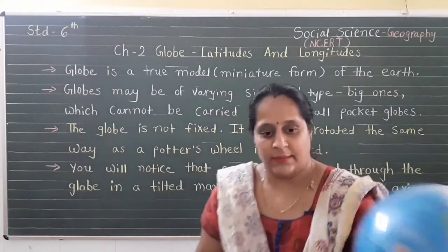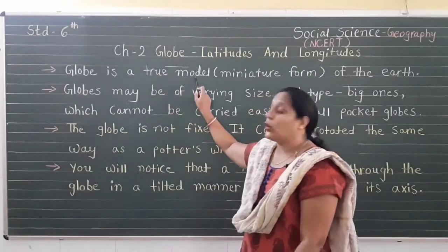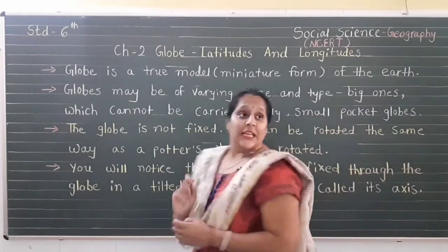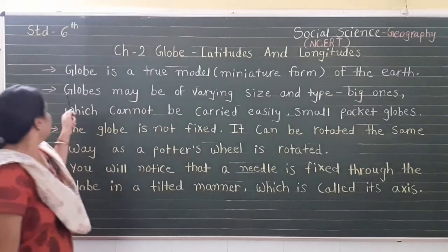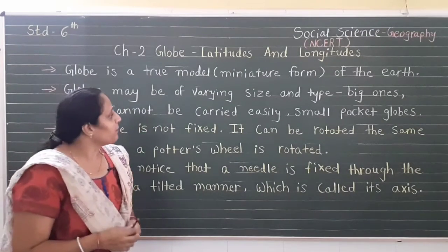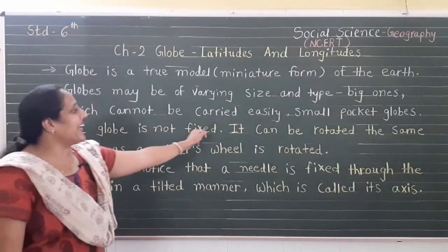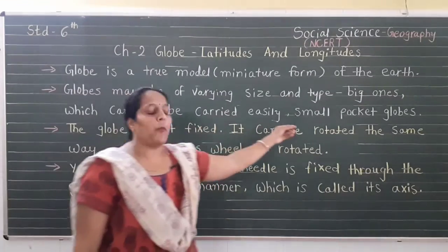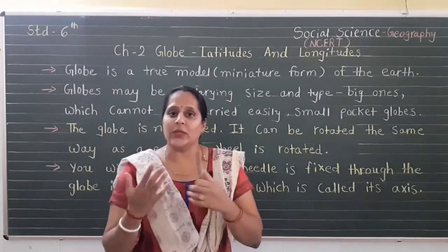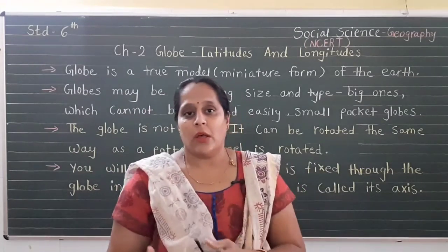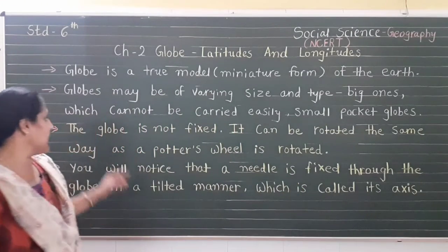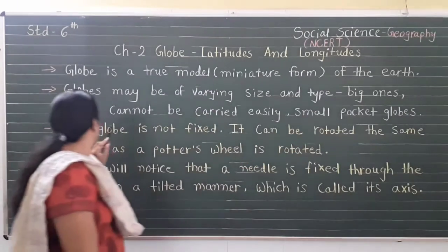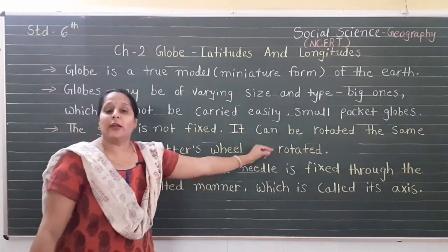Our first point is: the globe is a true model and miniature form of the earth. Globes may be of various types — big ones which cannot be carried easily, as I have shown you through this globe, and some pocket globes are also available. Some balloon-kind of globes are also available which are very easy to carry. The globe is not fixed; it can rotate the same way as a potter's wheel.